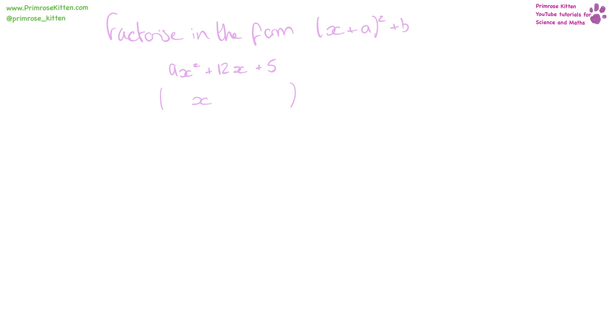Because the brackets need to be the same, I need two numbers that multiply to make 9. Now we know that is going to be 3, so we have 3x.